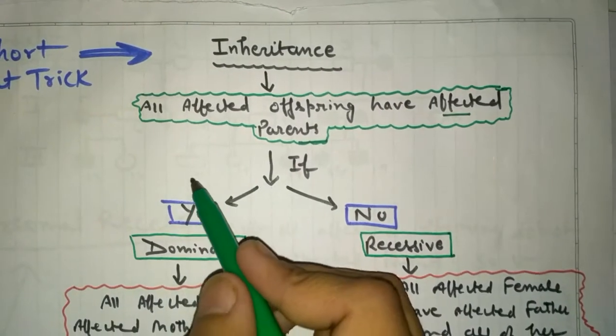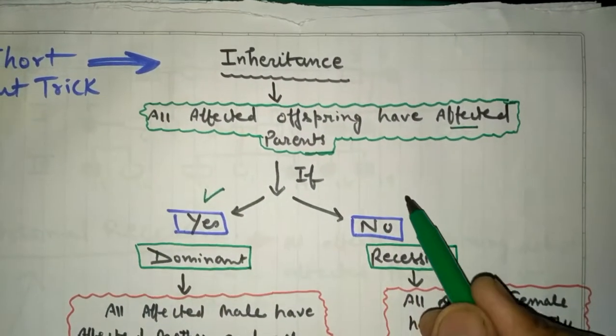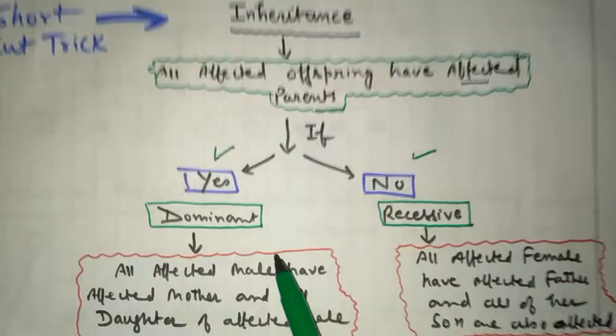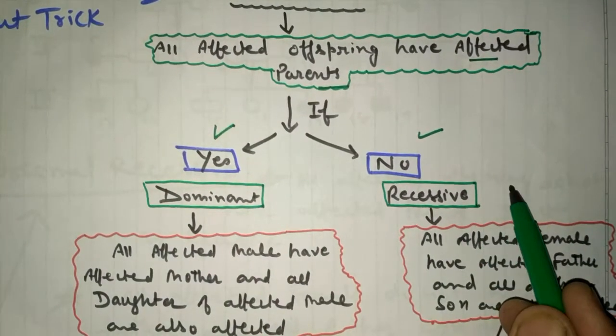If it is occurring, it is yes. If it is not, it is no. If it is yes, it shows dominant. If it is no, it shows recessive.